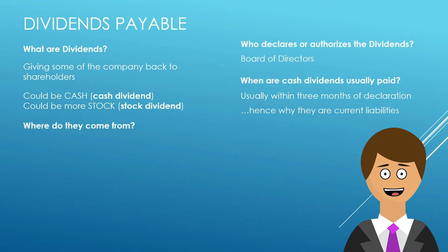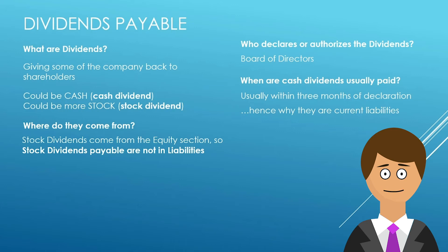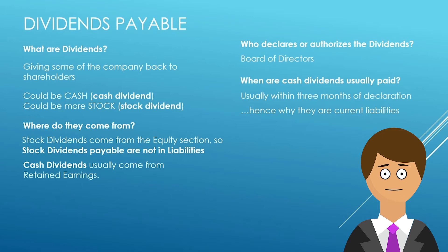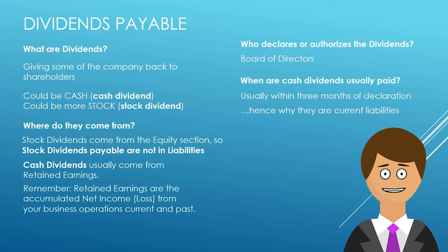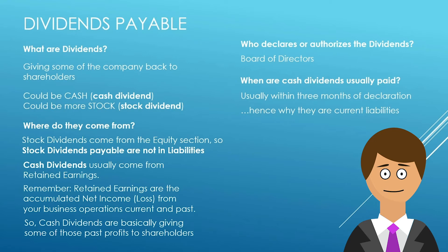So where do these dividends come from? We said giving back some of the company — what does that mean? Stock dividends come from the equity section of the balance sheet, so stock dividends payable are not really liabilities and we'll discuss them in future equity section discussions. It's really about the cash dividends that usually come from retained earnings. We're paying them out of cash, but we can do that because we've made profits. Retained earnings are the accumulated net income or profits from your business operations — both current and past — all added up together. So cash dividends are basically giving some of those past profits back to the shareholders.